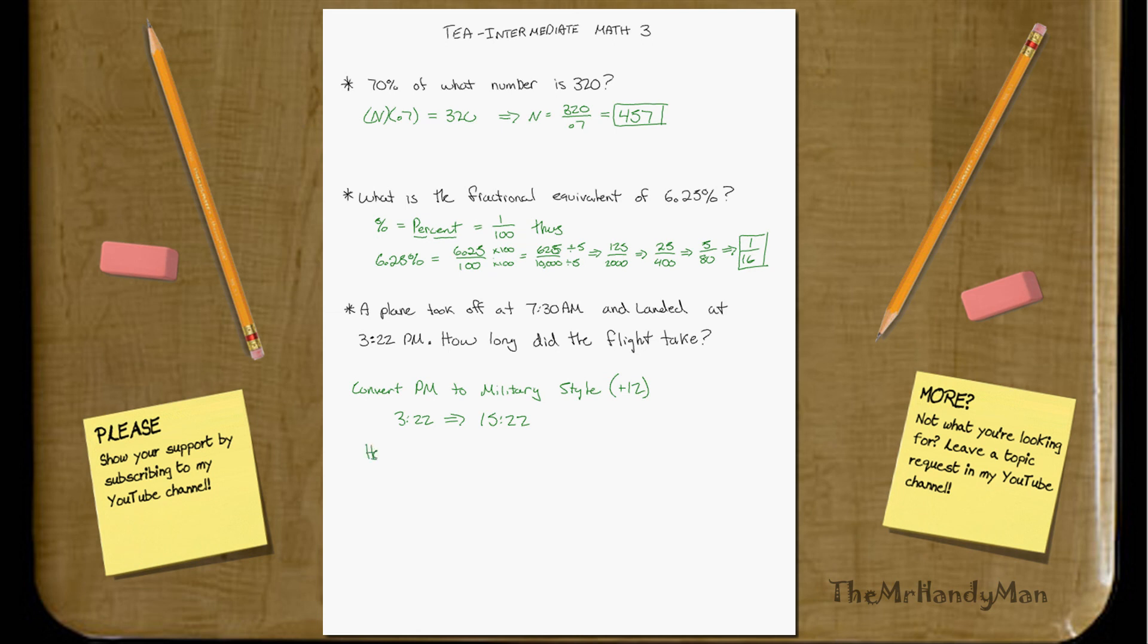So, basically, you just deal with the hours first. I would deal with the hours first and then compensate with the minutes later. What you'll find is you have 15 minus 7 equals 8 hours. That's a good estimate, but what about the minutes?